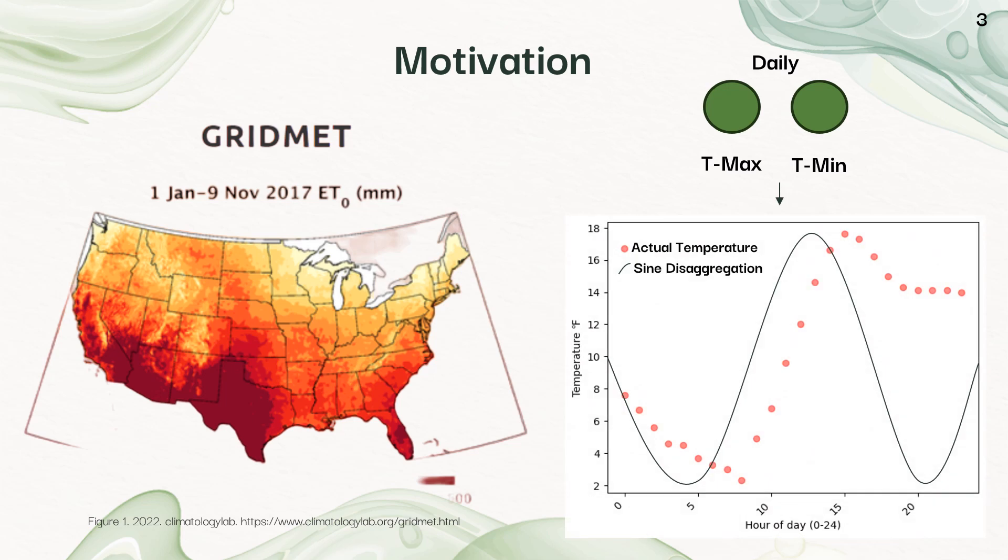This can work well. This particular example shown below doesn't work great, the actual data being in those red dots and the sine curve being that line, and there's just showing that if you have errors in your disaggregation, those can propagate to systemic errors in your model.